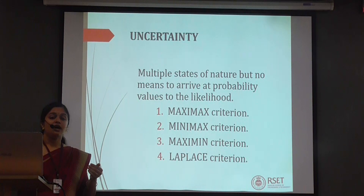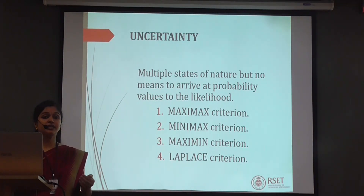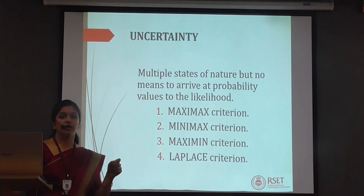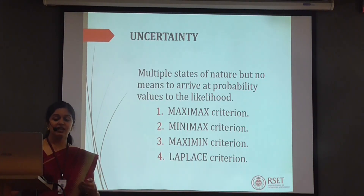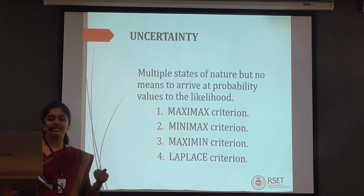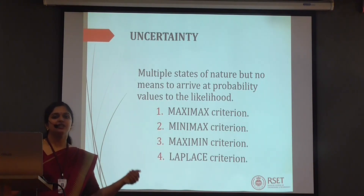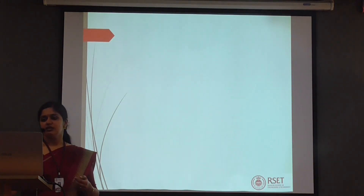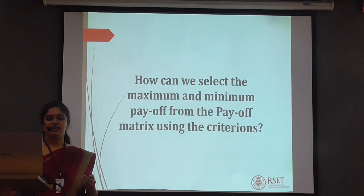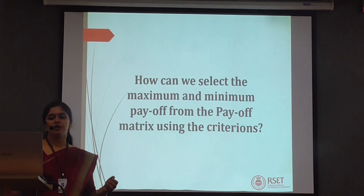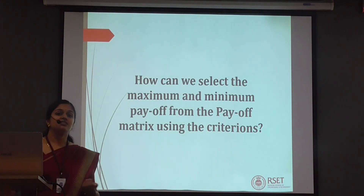Now let us consider the case of an uncertainty atmosphere. In an uncertainty atmosphere, the decision maker is not clear about the probable outcome — he cannot figure out what the result of his decision will be. We have different criteria: Maximax, Minimax, Maximin, and Laplace criteria, based on the attitude of the investor under different conditions. Before discussing each criterion, we will first understand how to select the maximum and minimum payoff from the payoff table.